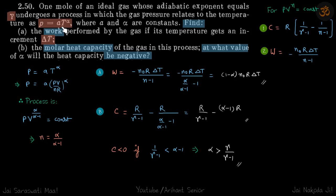We need to identify what kind of polytropic process it is. We'll convert temperature in terms of volume, and from here we get PV^(α/(α-1)) = constant. So our polytropic process has the value n = α/(α-1).